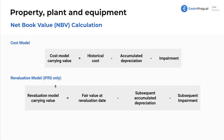The revaluation model is for IFRS only. Under the revaluation model, it's fair value at the revaluation date — so the IFRS model basically makes you revalue your assets constantly — minus subsequent accumulated depreciation, minus subsequent impairment. A class of fixed assets is revalued to fair value and reported at fair value minus subsequent accumulated depreciation and impairment. These revaluations are made frequently enough to ensure the carrying amount does not differ from fair value.